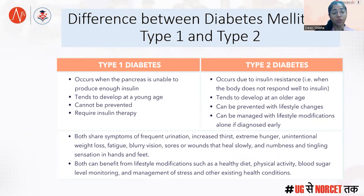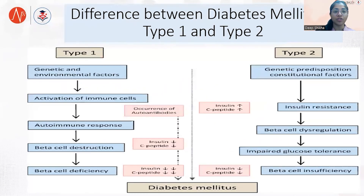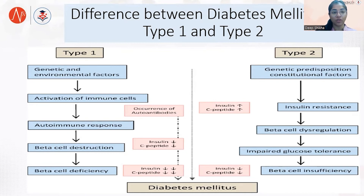Both also share slow wound healing and numbness or tingling sensations in the hands and feet. Lifestyle modification plays a very important role. Now, if you write the answer as a paragraph, it is not going to fulfill the purpose of the examination, whereas depicting it in a table and then a flowchart would be very important and marks-fetching as well.